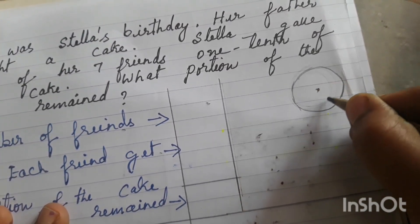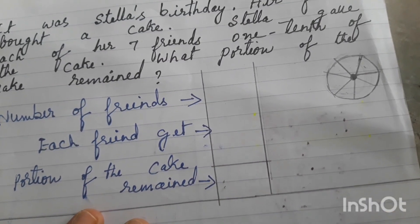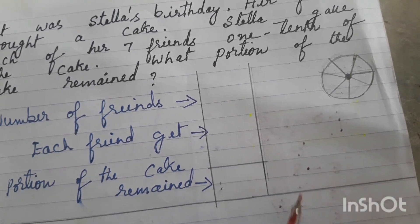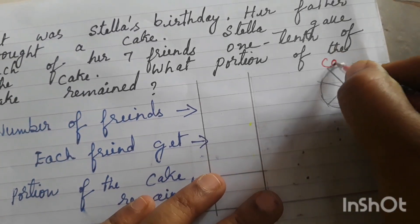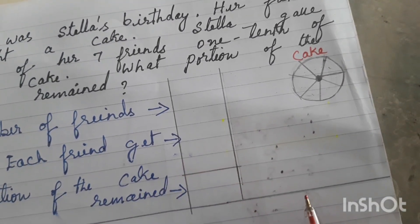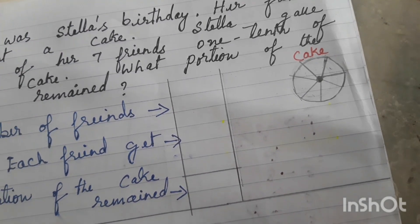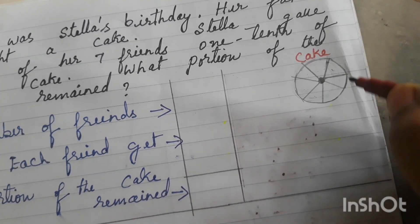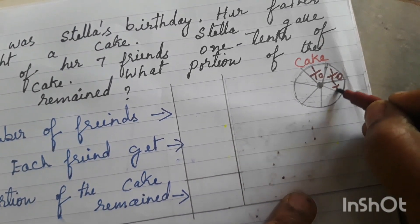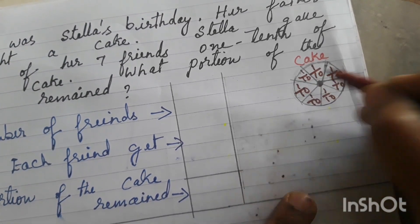There are seven friends. The cake is divided. Each friend receives one by ten of the cake — so there are seven portions of one by ten each.